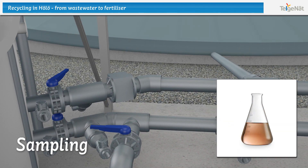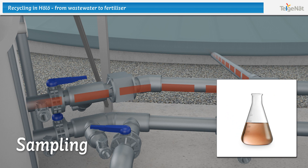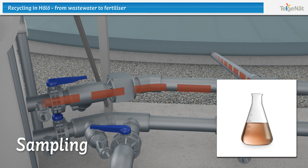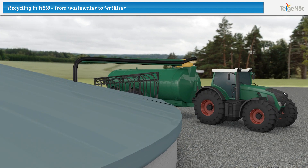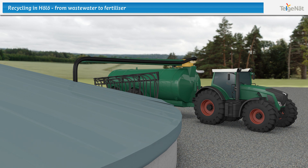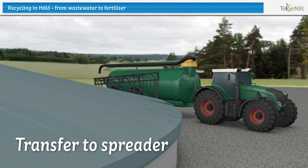The process is controlled through measurement of time, temperature, and pH. The entire treatment time for sanitizing amounts to 14 days. The reactor is then emptied into final storage, where 1,500 cubic meters of fully treated fertilizer can be stored until it is time to spread it on arable land.